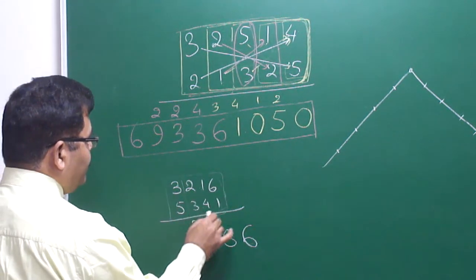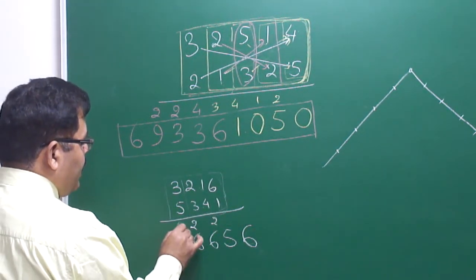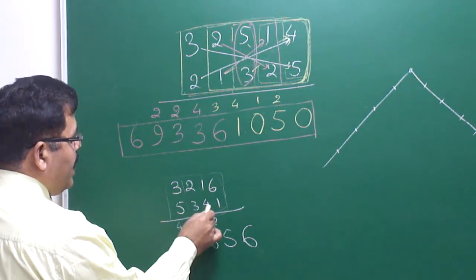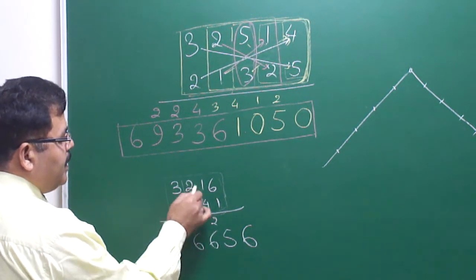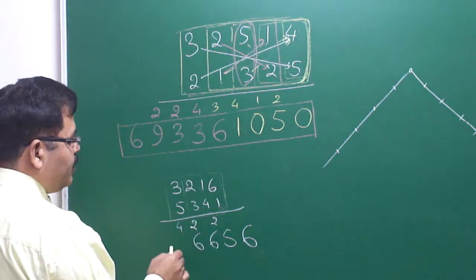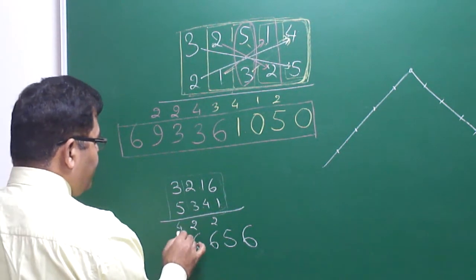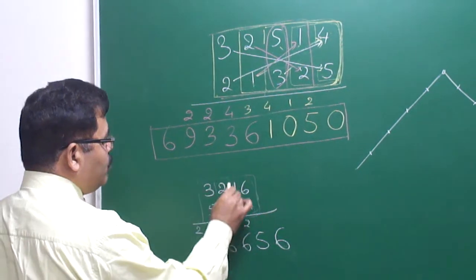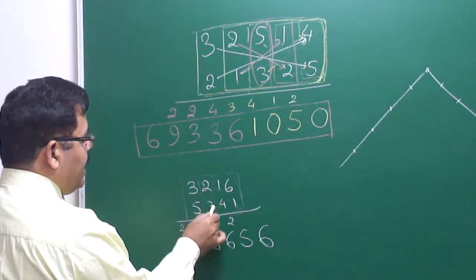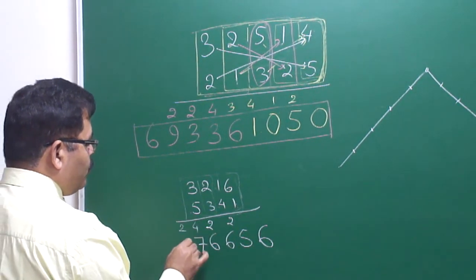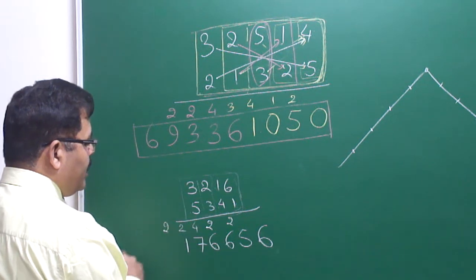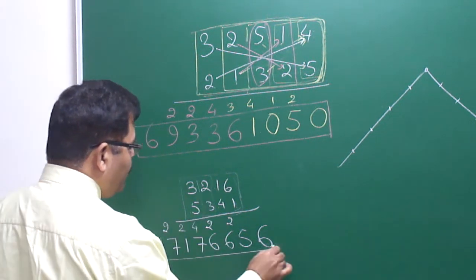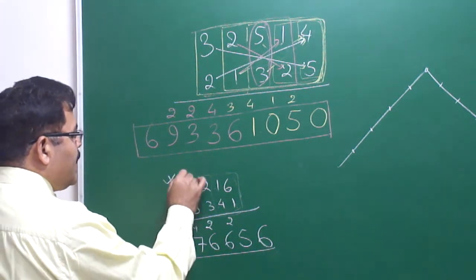Taking the last three together with carry 4: 12 + 5 = 17, plus 6 = 23, plus 4 = 27, write 7, carry 2. Taking last two together: 9 + 10 = 19, plus 2 = 21, write 1, carry 2. And the final step: 3 × 5 = 15, plus 2 = 17.